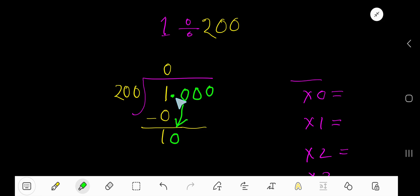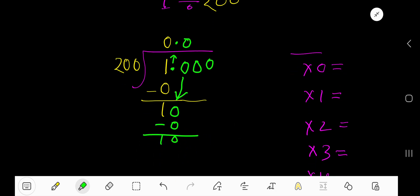But look, before this 0, there is a decimal. So decimal must come to the quotient directly. 200 goes into 10, 0 times. 0 times 200 is 0. If you subtract, then you are getting again 10. Bring down this 0. You are getting 100.